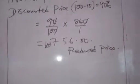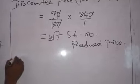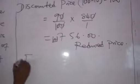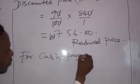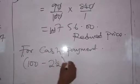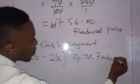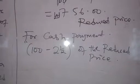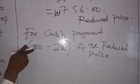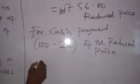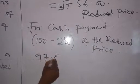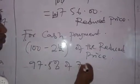He has reduced the price to 756 Naira. But if you are willing to pay cash, it is now going to be minus 2.5% for cash payment. For cash payment, it is going to be 100 minus 2.5% of the reduced price. The reduced price is already 756 Naira, but since you are paying cash, he gives you a further 2.5% discount. So we do 100 minus 2.5, which gives 97.5% of the reduced price of 756 Naira.